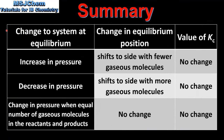To end with a summary: in this table we have change to the system at equilibrium, change in equilibrium position, and change in the value of Kc. When the pressure is increased, the equilibrium position shifts to the side with fewer gaseous molecules. When the pressure is decreased, the equilibrium position shifts to the side with more gaseous molecules. And changes in pressure when there are equal numbers of gaseous molecules in the reactants and products has no effect on the equilibrium position. The value of Kc does not change when changes are made to the pressure of the system.